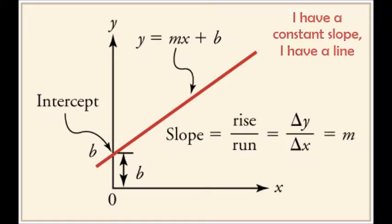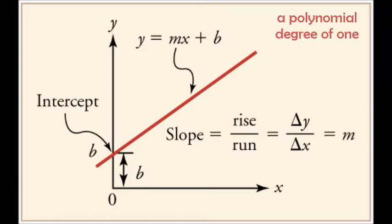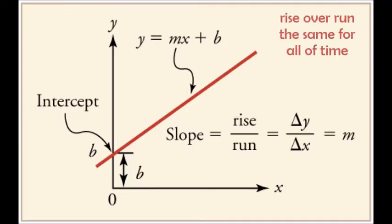I have a constant slope, I have a line, a polynomial degree of one, rise over run, the same for all of time, mx plus b, I graph the line.